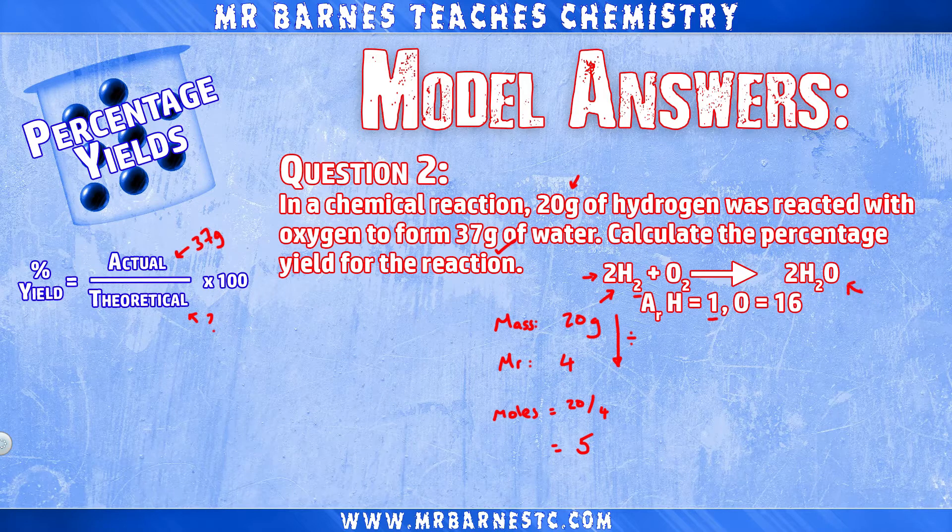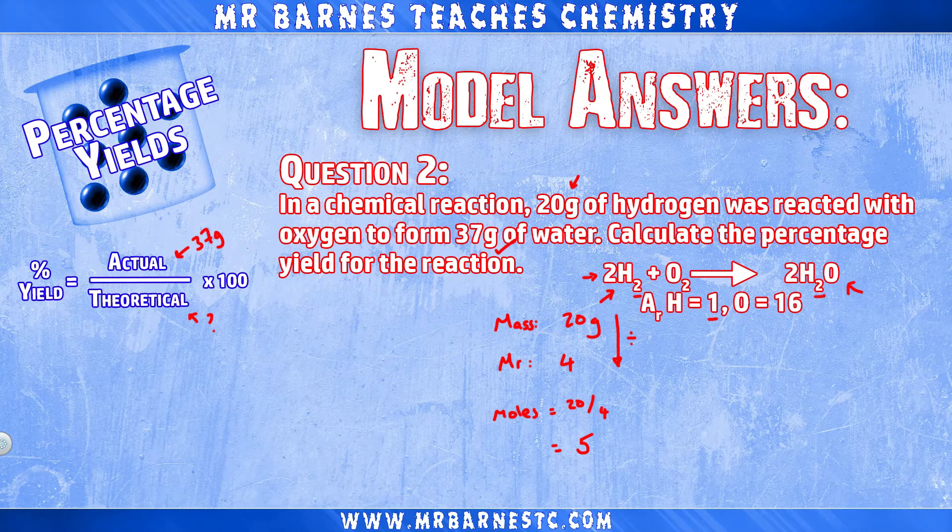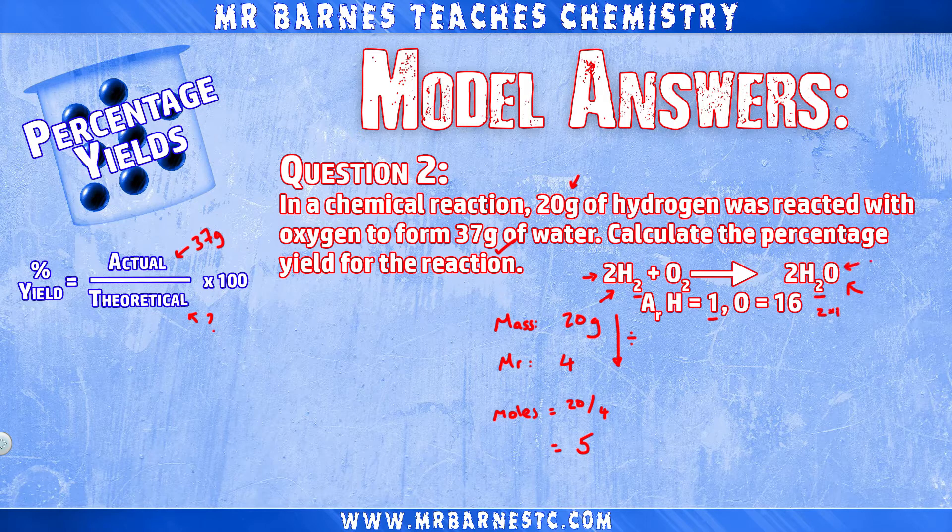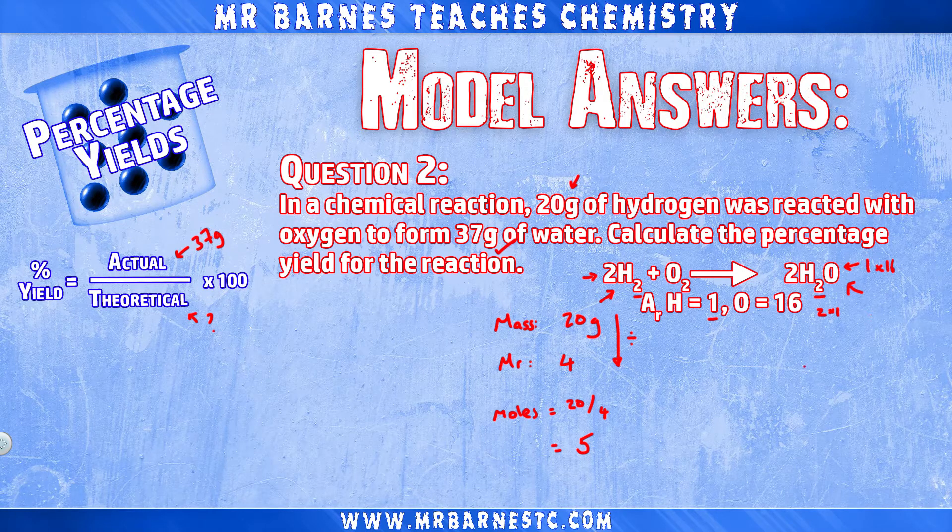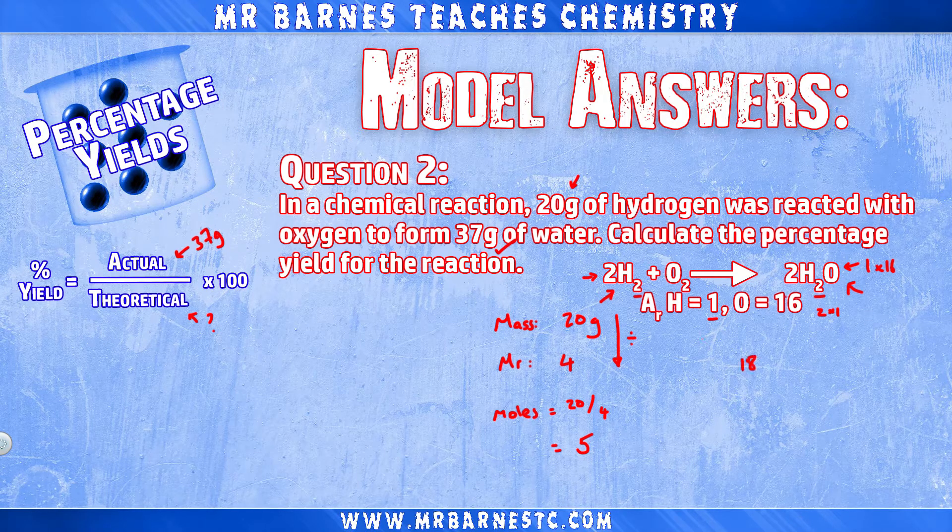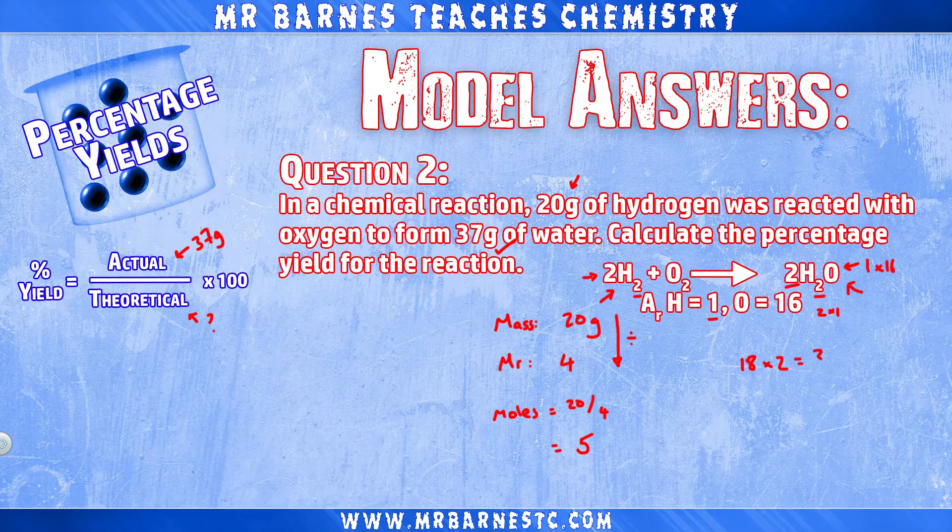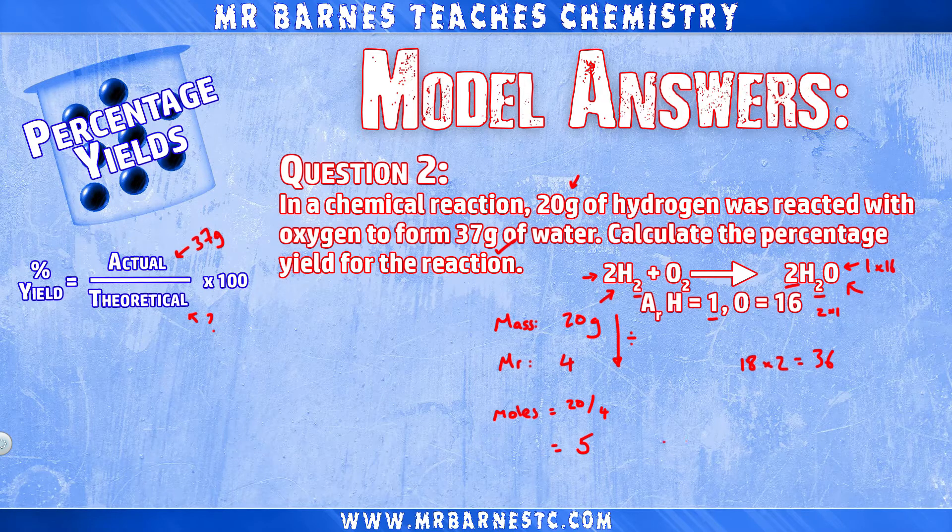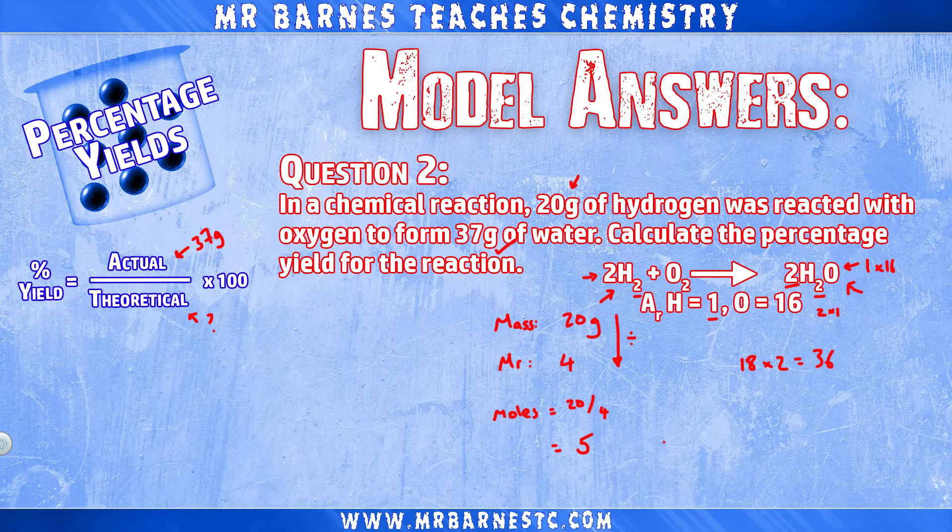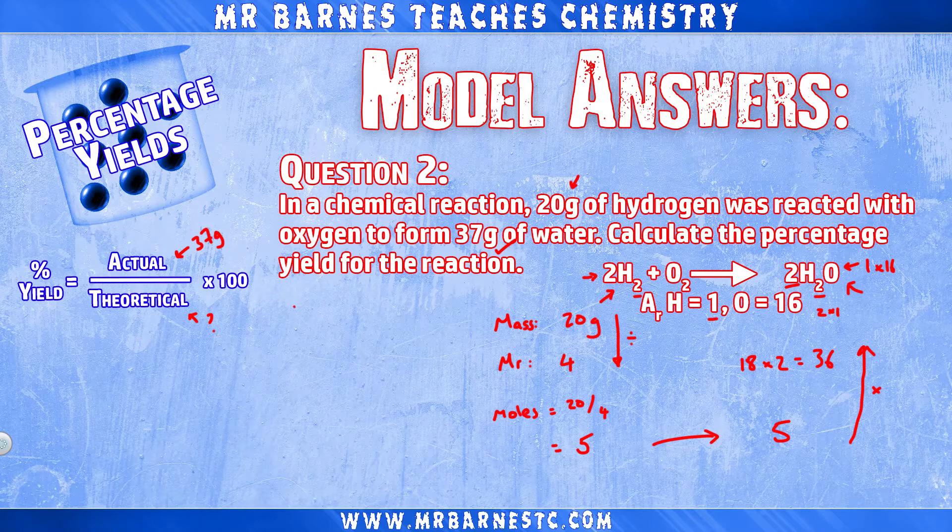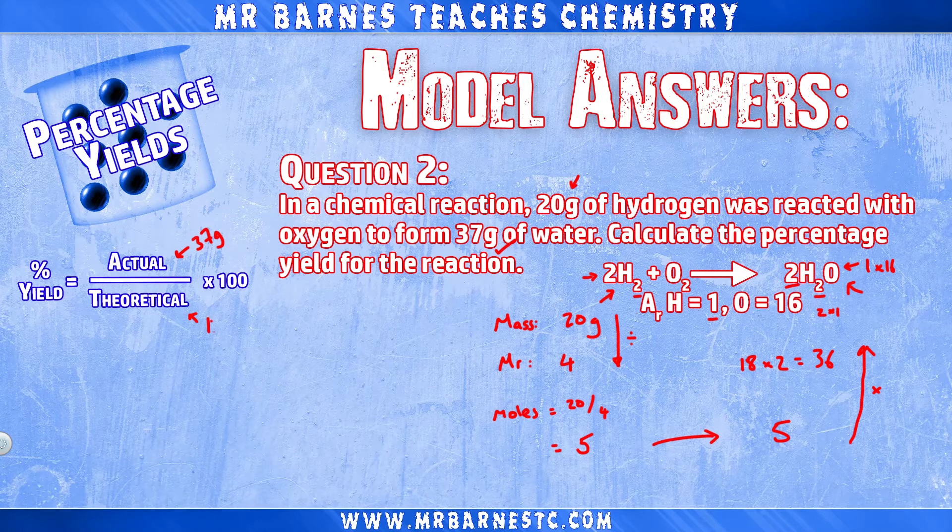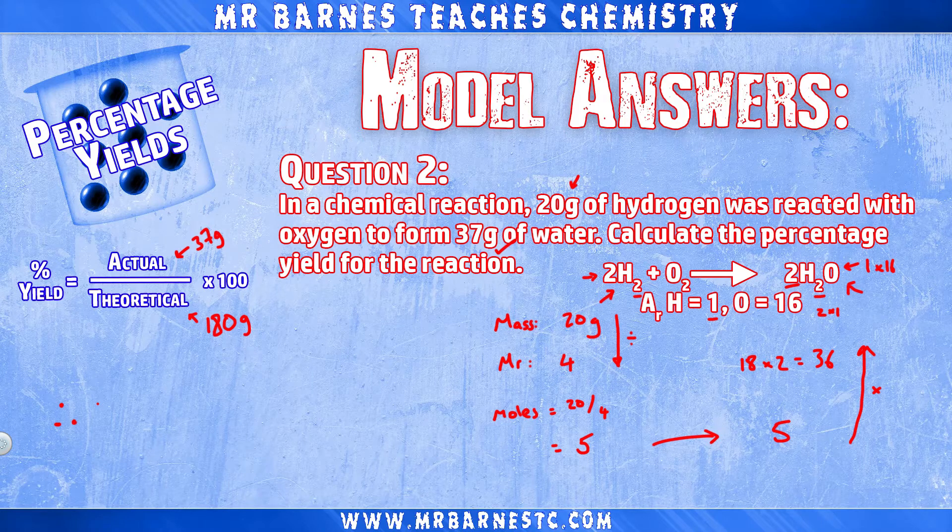We can then work out the formula mass for our two water molecules. So two times one for my hydrogen, one times 16 for my oxygen, giving water a formula mass of 18. I have got two of them, so two times 18 gives me 36 for my formula mass. My moles for water is the same as hydrogen, so five. Therefore the theoretical yield for water is five times 36, which is 180.